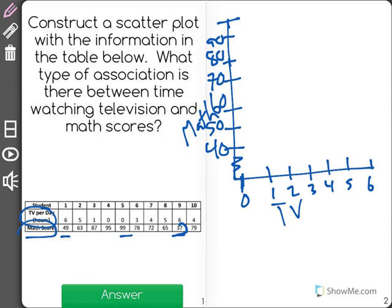Now what I'm going to do is plot each of these points. (6, 49), well that will go over here, (6, 49), then (5, 63), right there, (1, 87), (0, 95), (0, 99), let's go even higher.